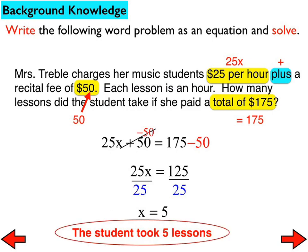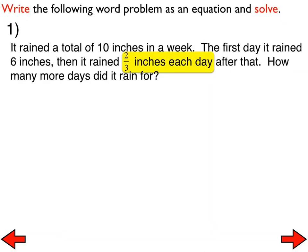Let's take a look at number 1. It rained a total of 10 inches in a week. The first day it rained 6 inches. Then it rained 2 thirds of an inch per day each day after that. How many more days did it rain?